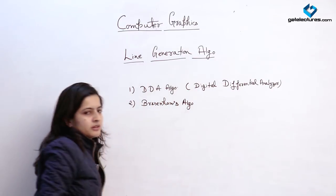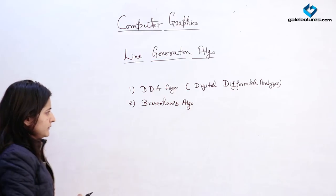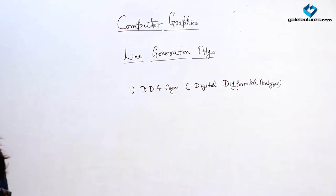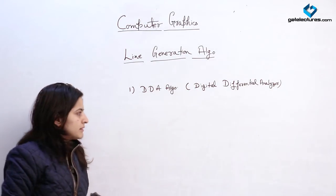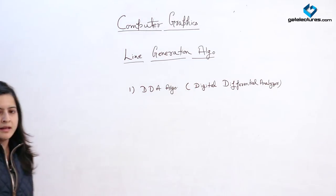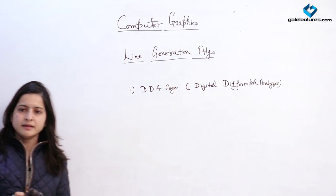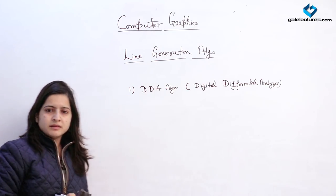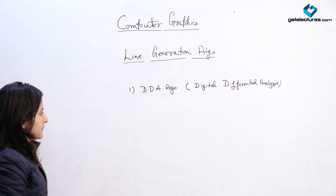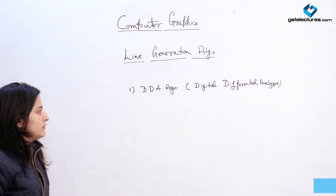The DDA algorithm, which stands for Digital Differential Analyzer, is the basic algorithm for the generation of a line. Before discussing any algorithm for line generation, we should consider some points: first, a line should always be a straight line; second, the consistency of the line should be consistent; third, the brightness and other properties of the line should be the same. Considering these points, we start with the DDA algorithm for line generation.